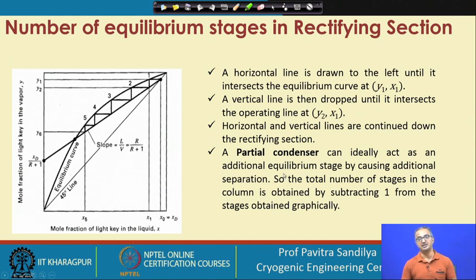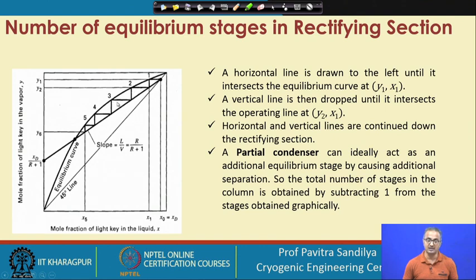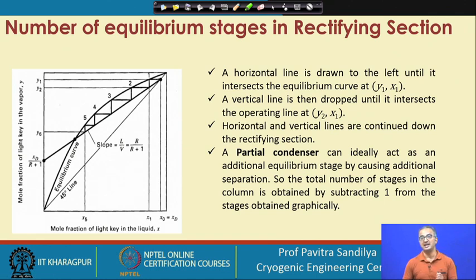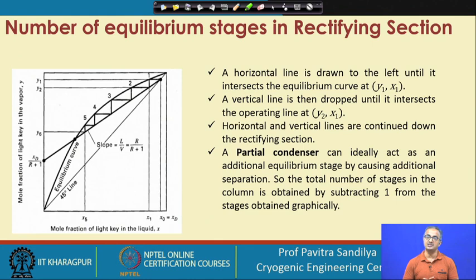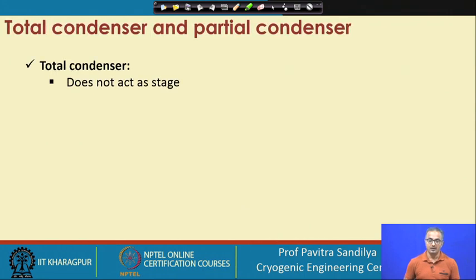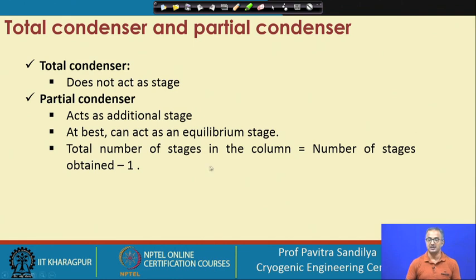Please note that a partial condenser can also effect additional separation and at best can act as one equilibrium stage. When counting stages, the number of horizontal lines equals the number of stages. If there is a partial condenser, the topmost step corresponds to the partial condenser — since (x_d, x_d) comes out of the condenser and not directly from the column, the actual number of equilibrium stages in the column is the total count minus one. This correction is not required when using a total condenser. A total condenser does not act as a stage, whereas a partial condenser does.